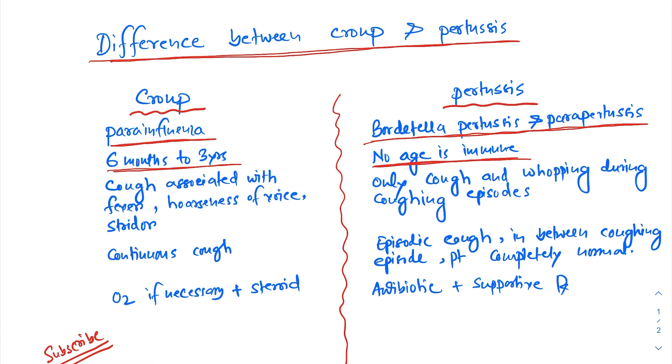Now the dominant feature of this illness is cough, but the cough characteristics are different. In croup, cough is associated with low-grade fever, hoarseness of voice, and stridor. On the other hand, in pertussis, the patient only coughs. There is no fever, hoarseness of voice, or stridor, and when coughing occurs patients develop whooping.